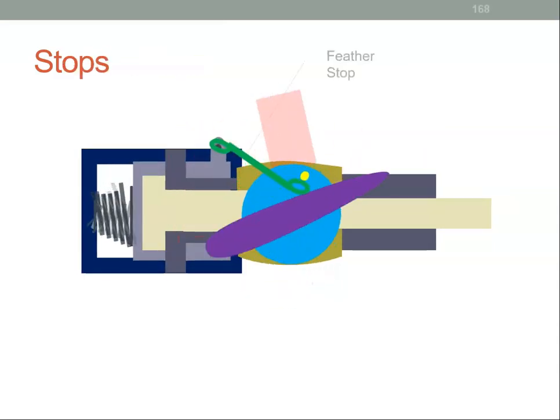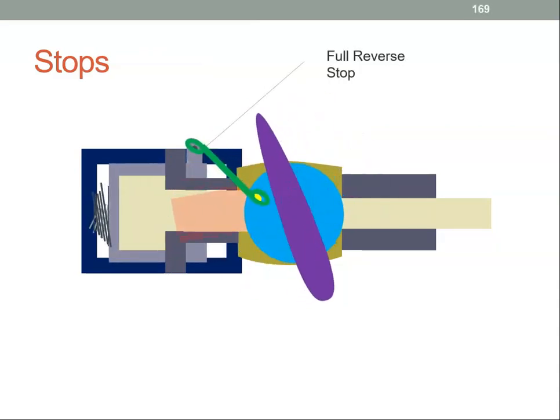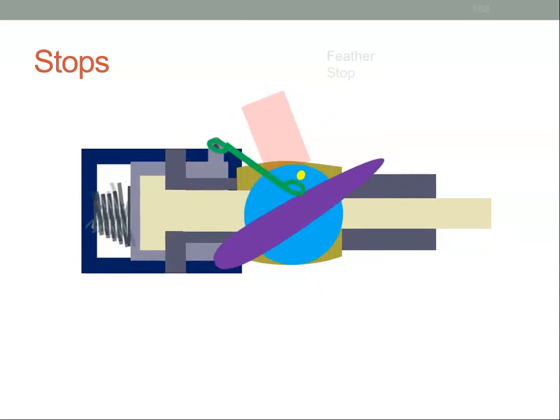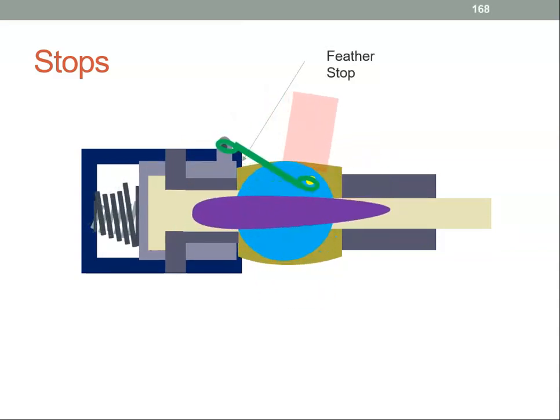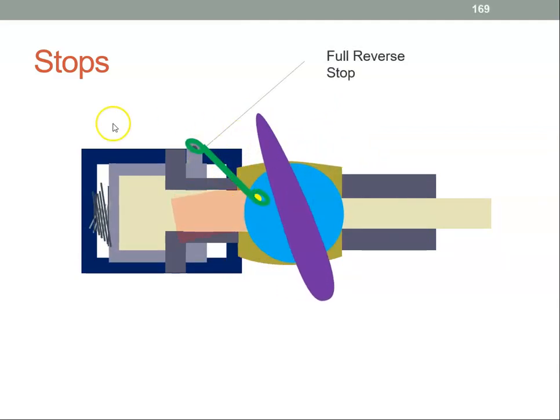Just look at those again. The propeller can move from there to there. That is the full range of movement of the propeller. They are machined stops.